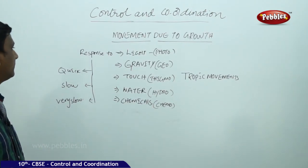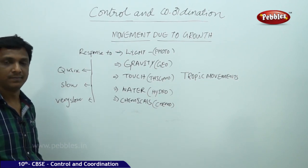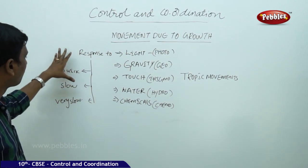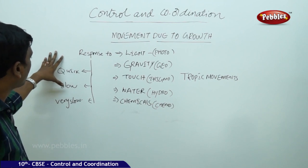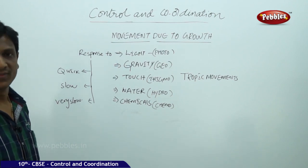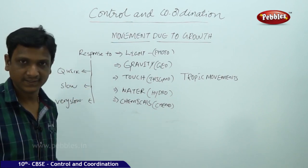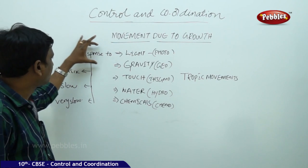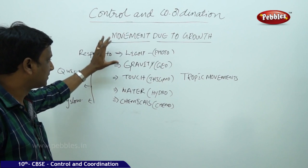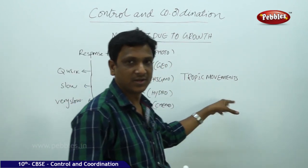Now let us see the different kinds of movements produced in plants associated with growth. The responses are of different types — some are very quick, some are slow, some are very slow. Even though they are a response to a stimulus, they happen very slowly. These slow movements are responses to stimuli like light, gravity, touch, water, and chemicals. We call these slow, growth-related movements tropic movements.